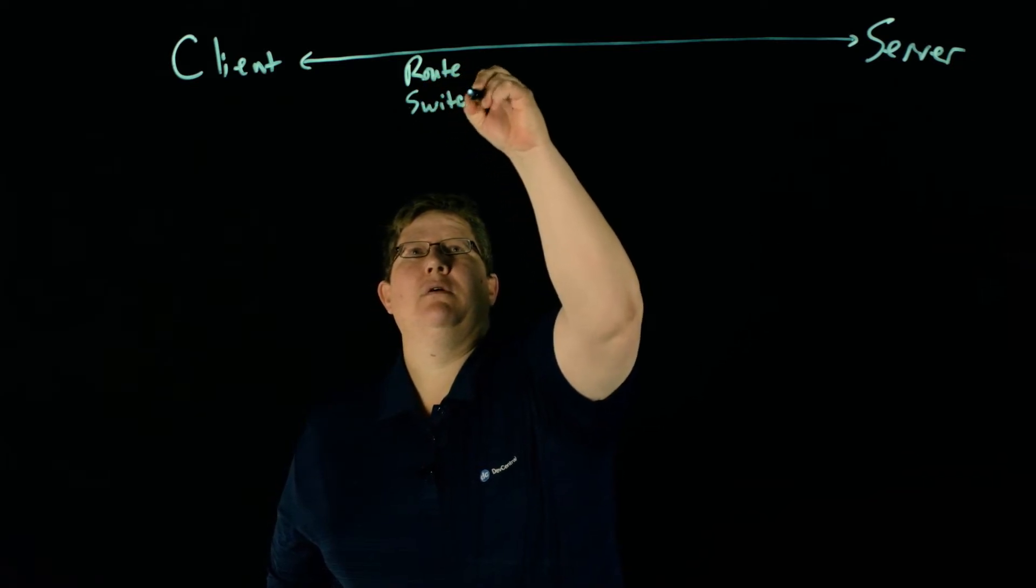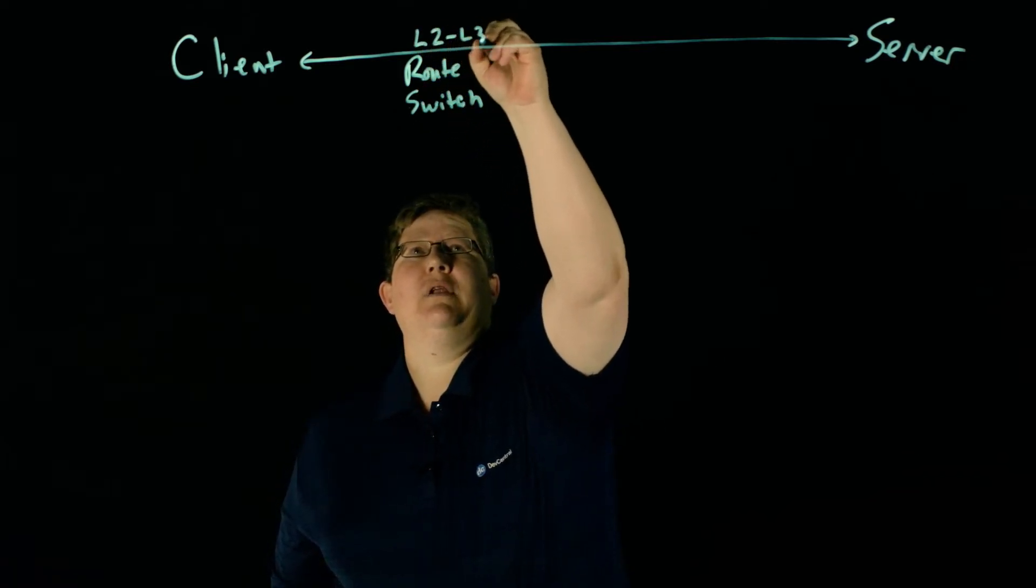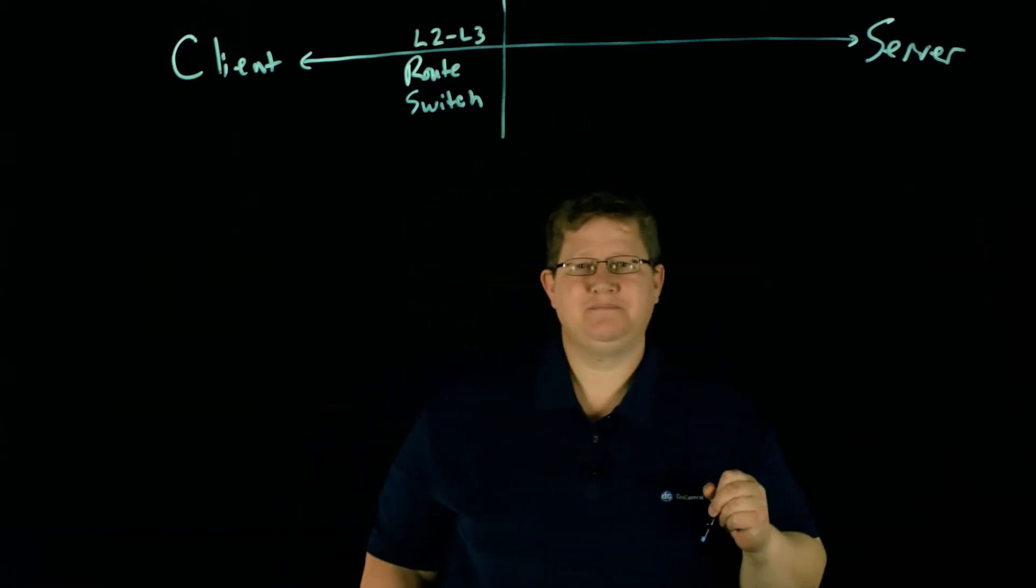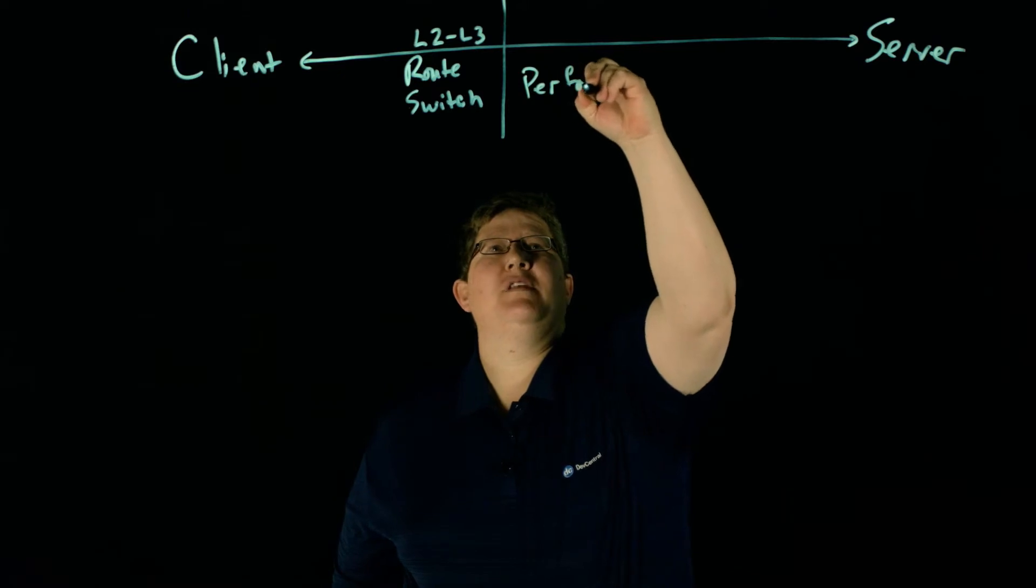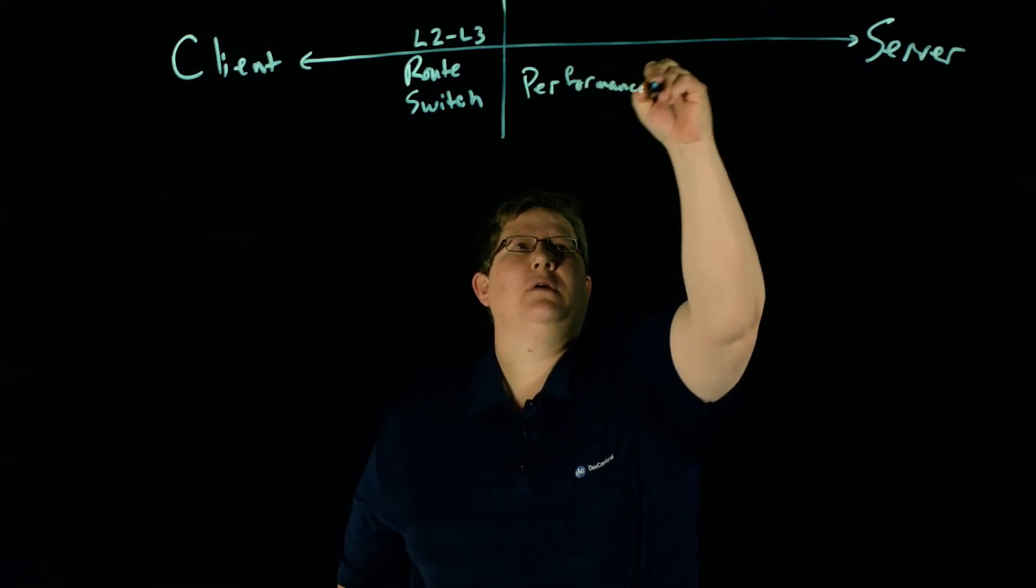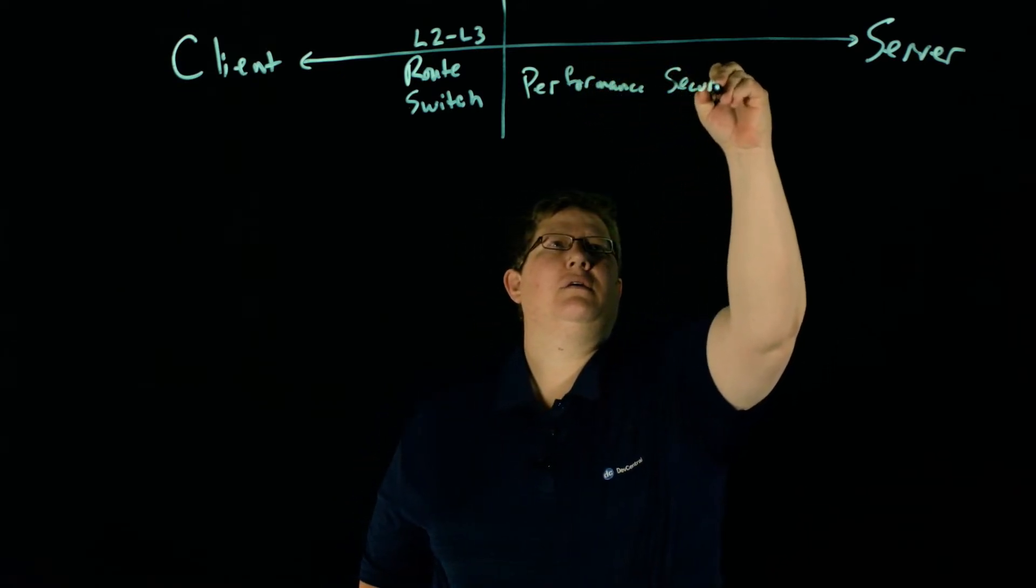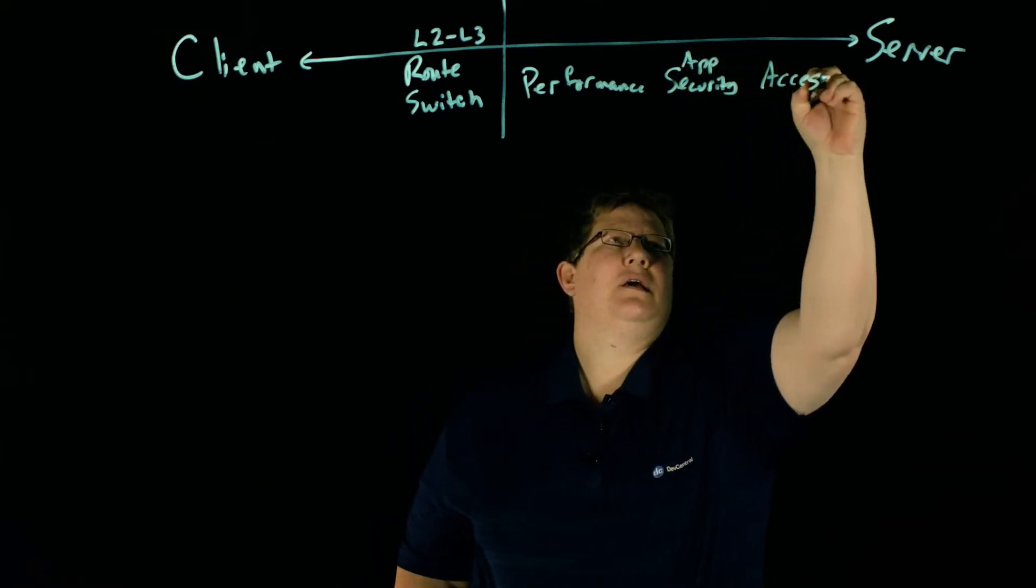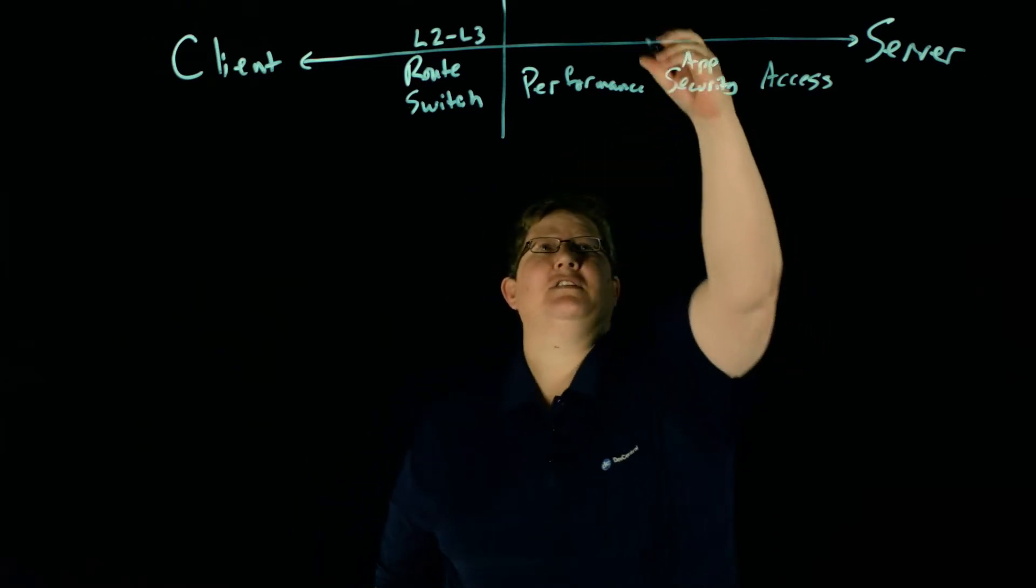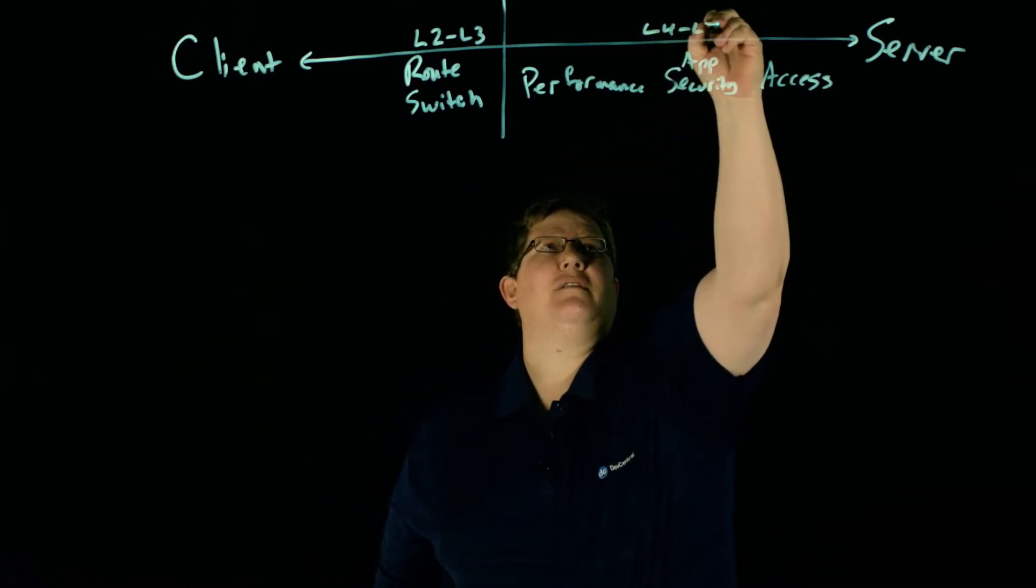So you have your routing and switching, and this is L2 and L3 on the data plane. And then you have your performance, security, app security, you have access, and whatnot. So you have all these other services, and this is all your L4 to L7 services.